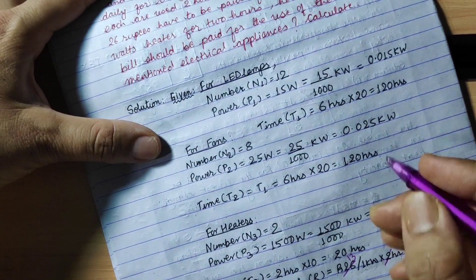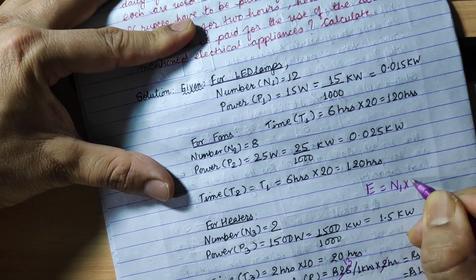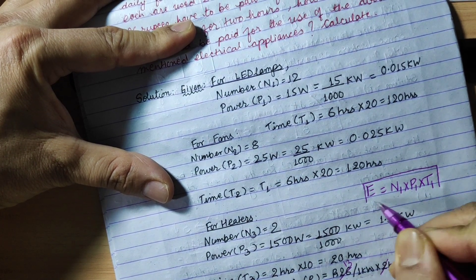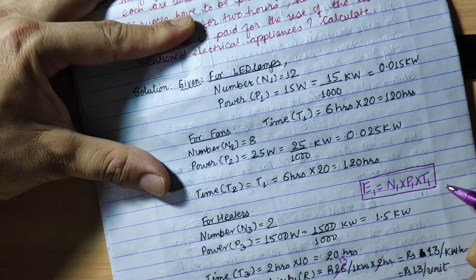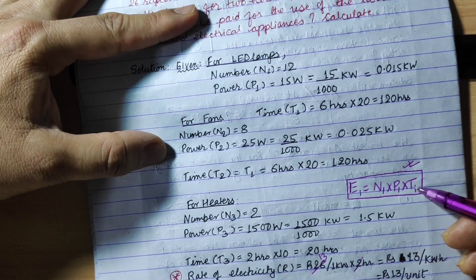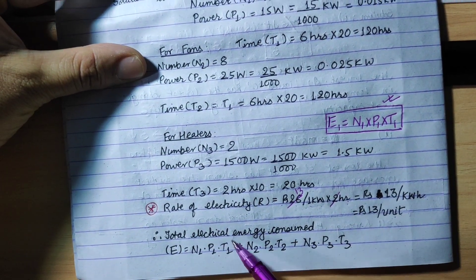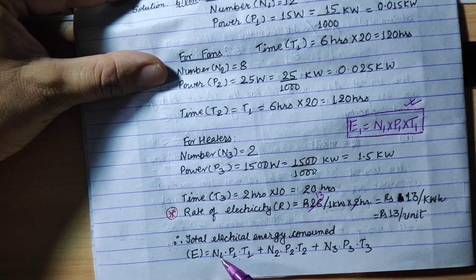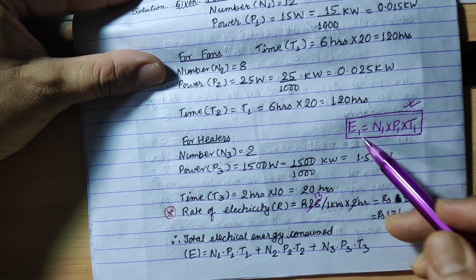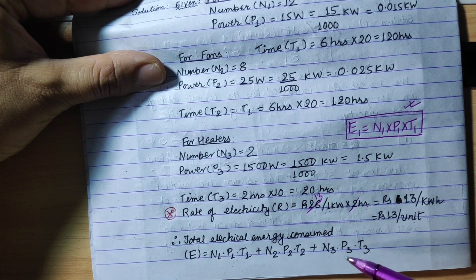The electricity consumption formula is: E = number of appliances × power × time, i.e., E = N × P × T. For all three appliances: E_total = (N1 × P1 × T1) + (N2 × P2 × T2) + (N3 × P3 × T3).